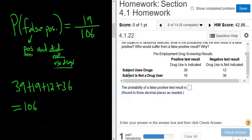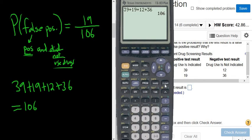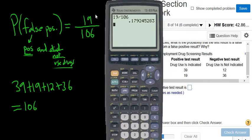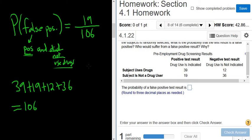So 19. Then you just put that in the calculator. Let's do that. So 19 divided by 106, that's .179. How many decimals does it want? Three. So perfect, .179. So the answer is .179.